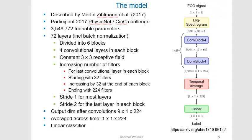We have four convolutional layers in each block. The output dimension after the convolutions is 9 by 1 by 224 filters. After averaging across time, the data is then fed into a linear classifier.